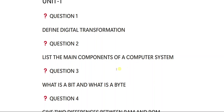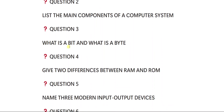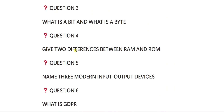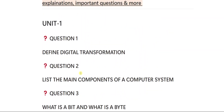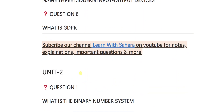Unit 1 questions: one — define digital transformation; two — list the main components of a computer system; three — what is a bit and what is a byte; four — give two differences between RAM and ROM (you need to be perfect with the differences because they might also ask in long questions); five — name three modern input/output devices; six — what is GDPR.